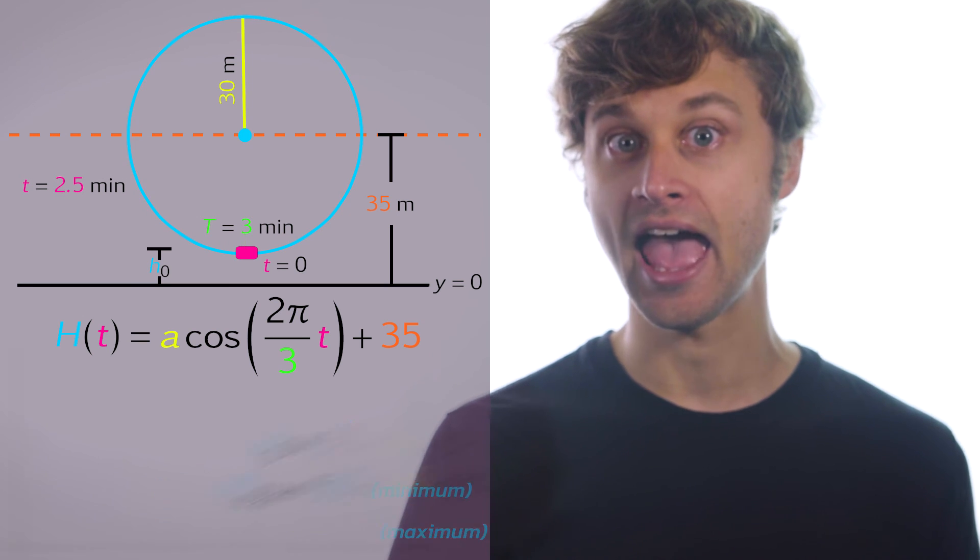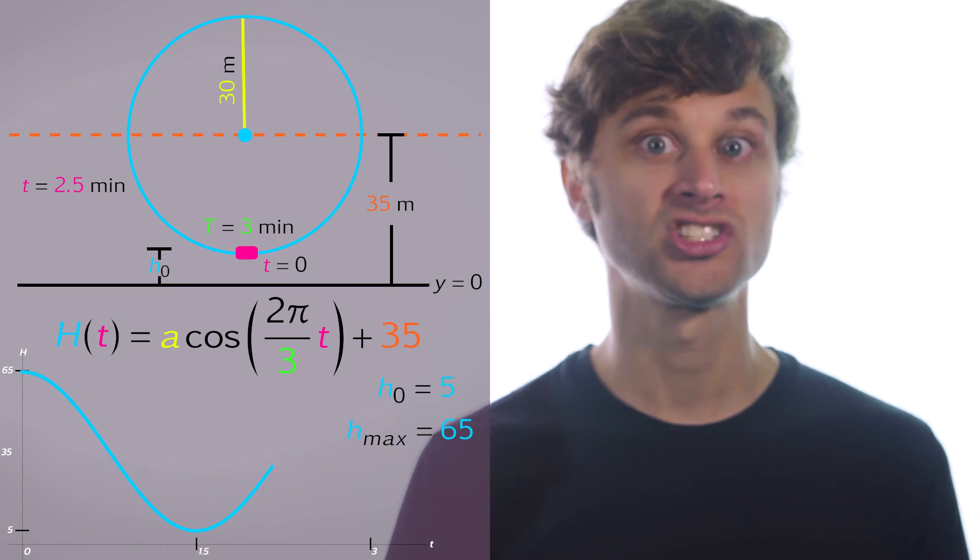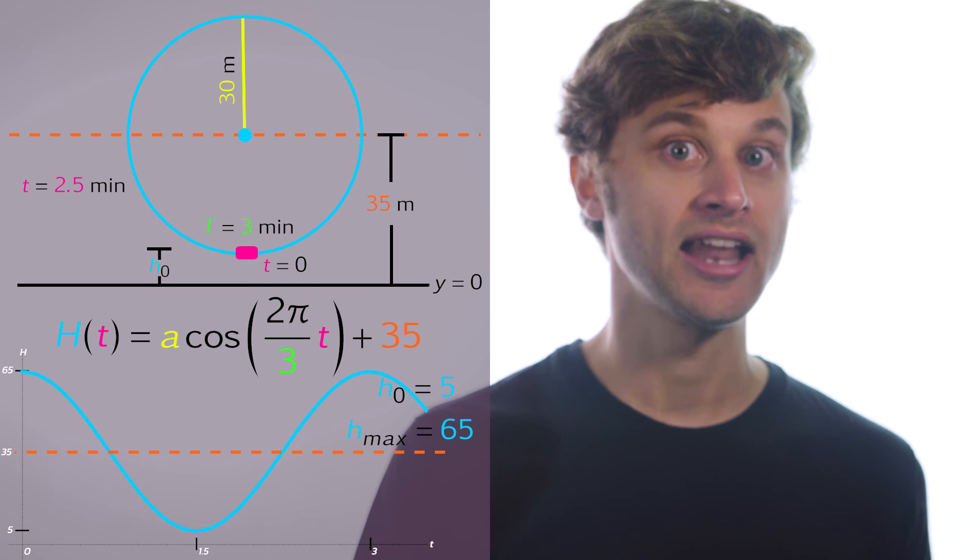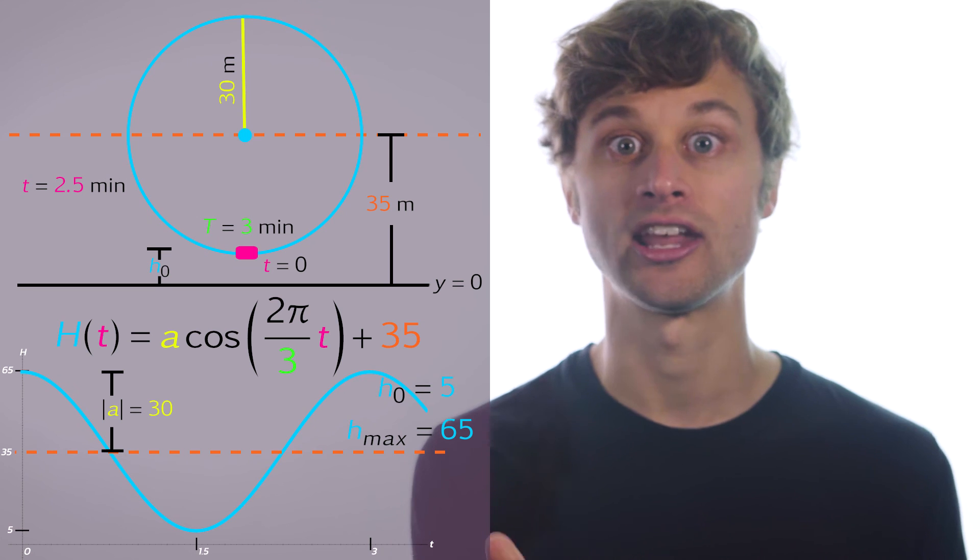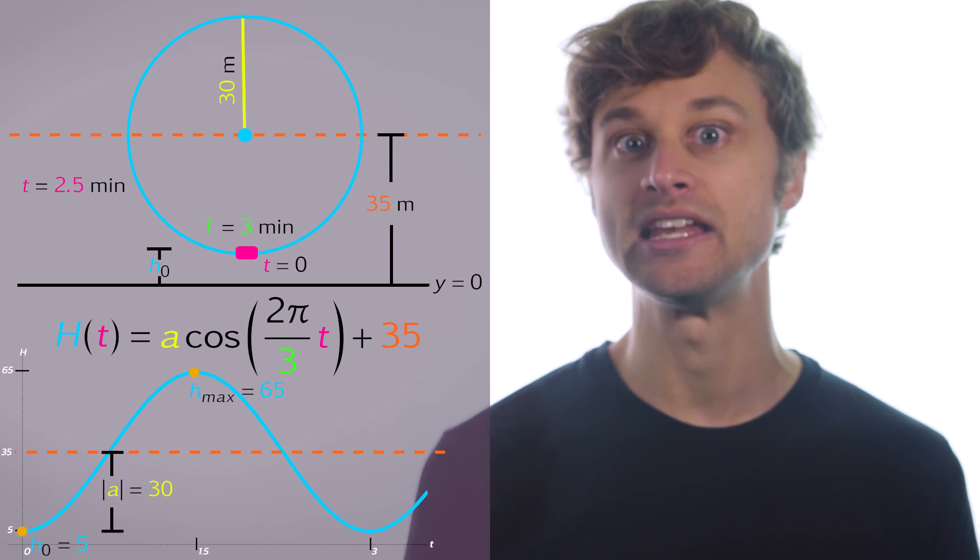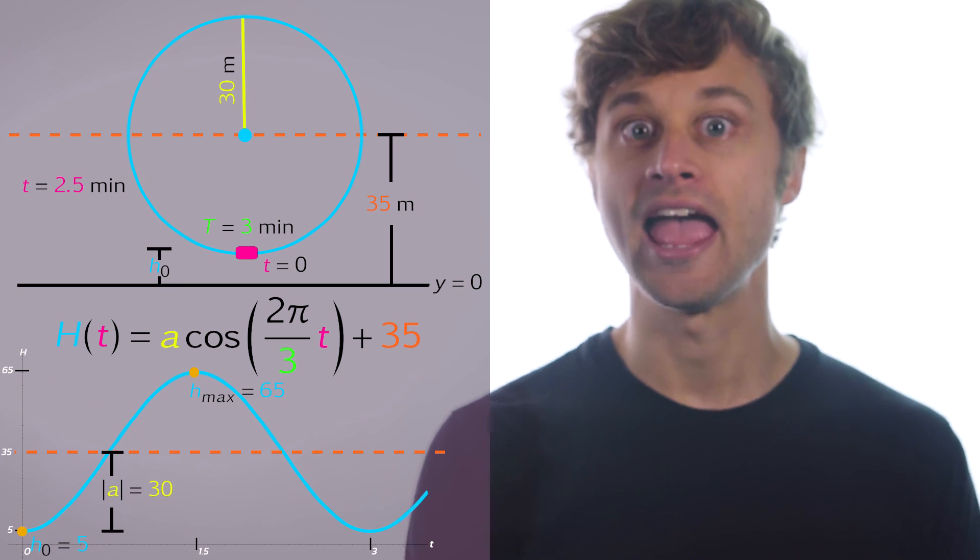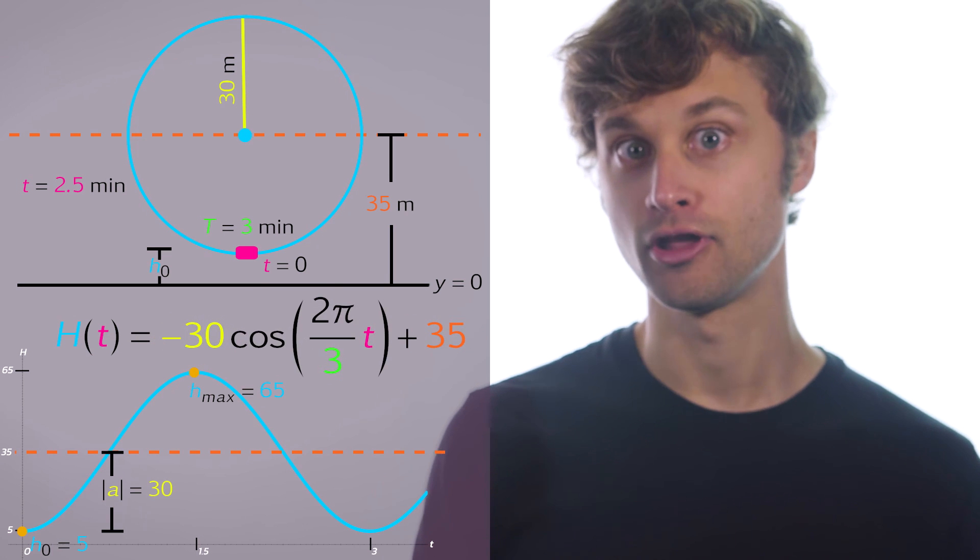But wait, there's one more thing we need to catch with a. Since cosine normally starts at a maximum when a is positive, we need to recognize in this function we're actually starting at a minimum, so a must be negative. So overall, a is actually going to be negative 30.